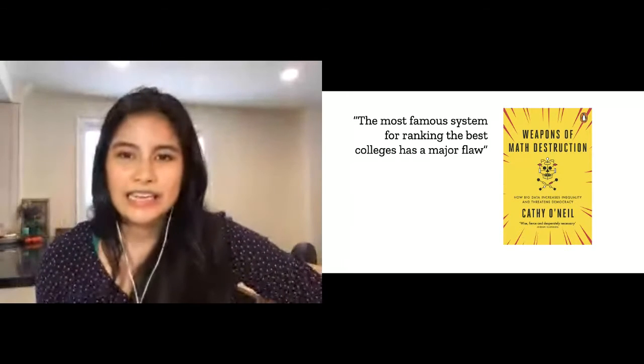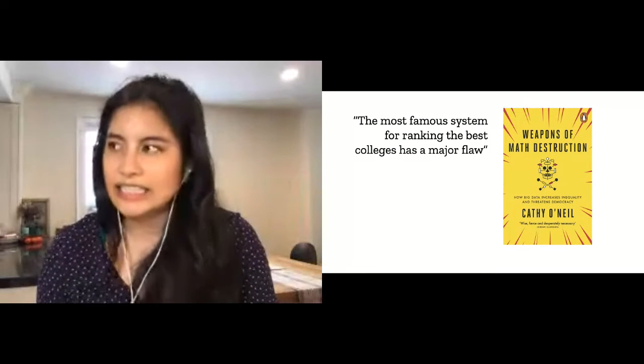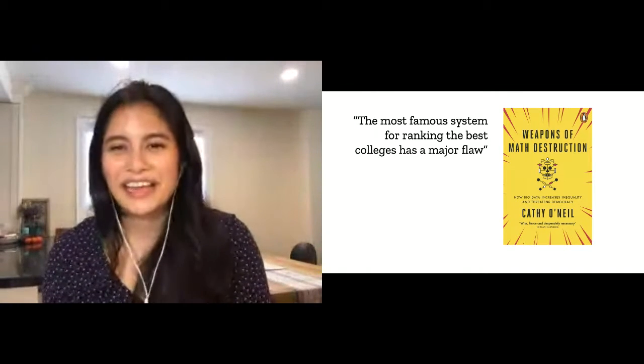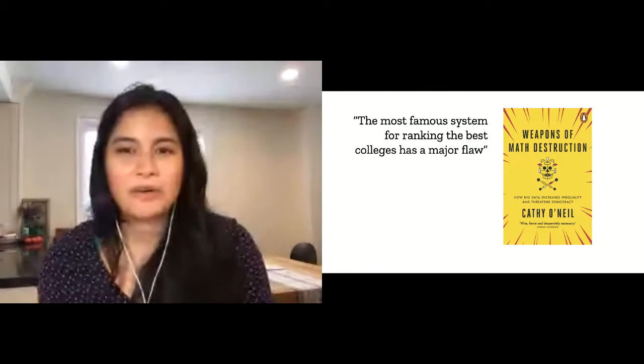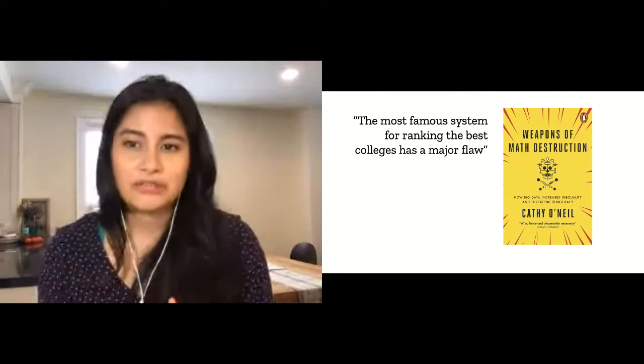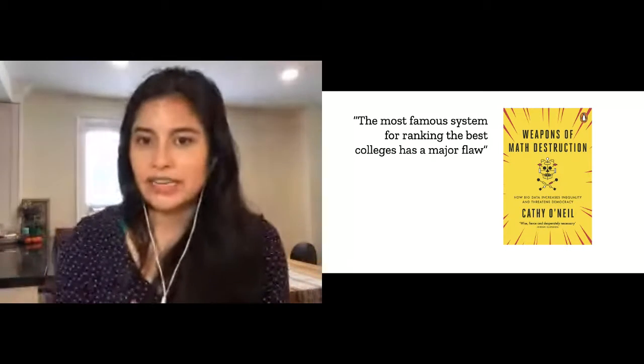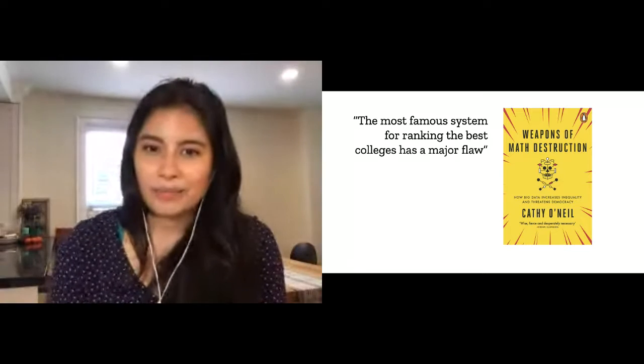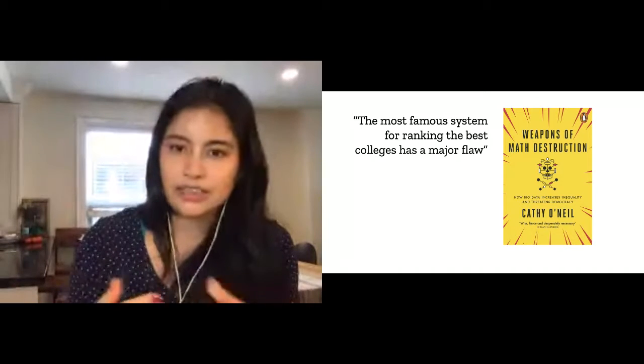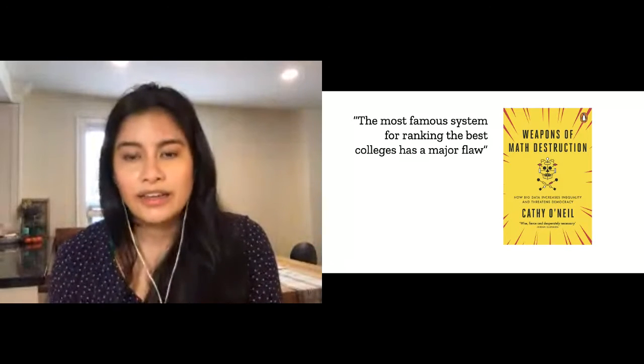The next example I have is from Cathy O'Neill's book Weapons of Math Destruction, where she talks about the college ranking system. In 1983, U.S. News started this opinion survey where they ranked the colleges, and they got a lot of complaints that it was unfair—people thought it was biased, it was just people's opinions. So in 1988 they put together an algorithm to measure this. They measured things like SAT scores, student-teacher ratios, acceptance rates, graduation rates, alumni contributions. By making it an algorithm and just using hard data, suddenly this was seen as much more fair than before.